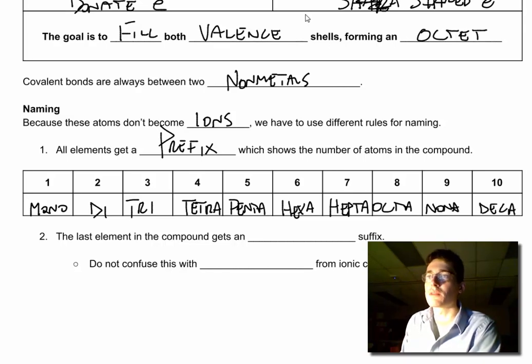They follow your geometry, your shapes. There's like a tetragon, a pentagon, a hexagon, a decagon. It just tells me how many atoms there are. We'll do an example in a moment. The last element in the compound gets an ide suffix. It's hard to remember, well it's not harder, you have to remember. Do not confuse these with anions from ionic compounds.